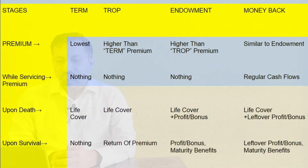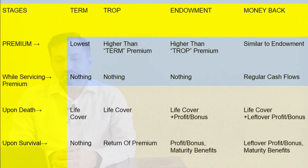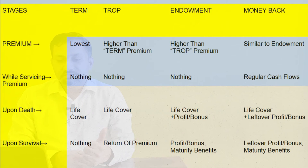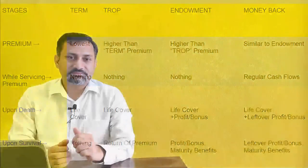That brings us to the end of this chapter. Under this topic of insurance, what we have discussed so far are term plans, TROP, endowment, and money back plans.